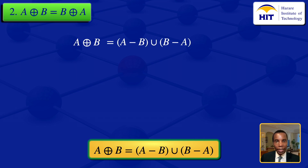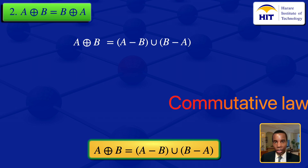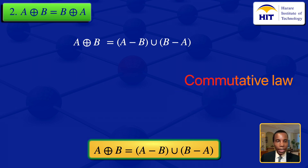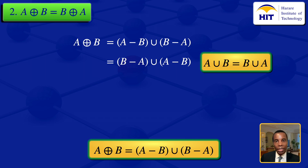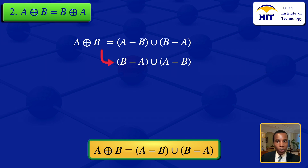Then we go on and look at the commutative law. The commutative law states that if we have two sets A and B, then A union B equals B union A. This commutative law allows us to rewrite the expression by starting with the set difference of B and A, so we have the set difference of B and A union the set difference of A and B. By using the definition of the symmetric difference, we see that this is the symmetric difference of B and A. So we have shown what was required.